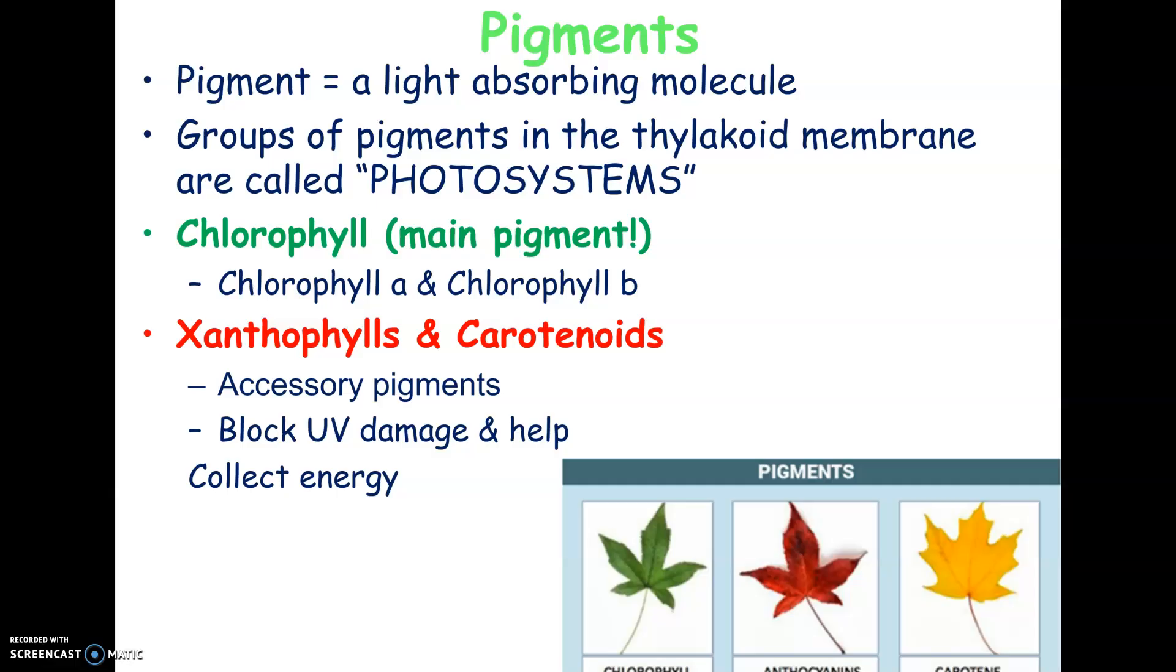The carotenoids and the xanthophylls, one of the things that they do is they block UV damage because ultraviolet light damages DNA. It damages our DNA as well. That's how skin cancer comes about. But one of the ways that leaves protect themselves from ultraviolet damage are these accessory pigments. They sort of block UV light.